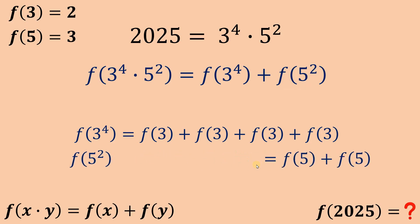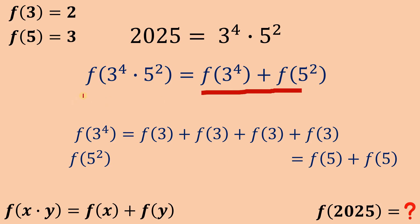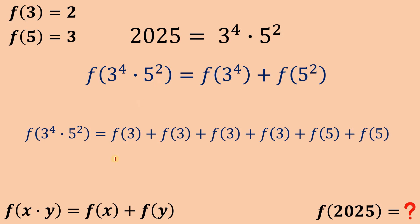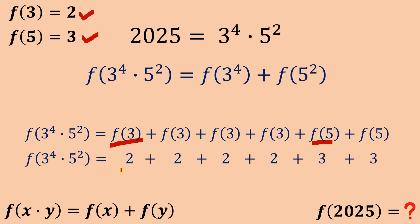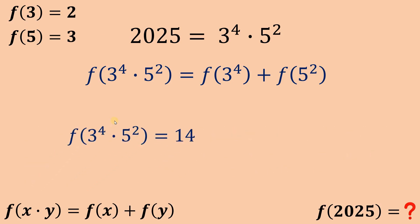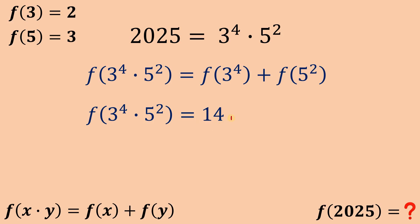Combining these, f(3⁴ times 5²) equals f(3) added 4 times plus f(5) added 2 times. We know f(3) equals 2 and f(5) equals 3, so adding 2 four times gives 8, and adding 3 two times gives 6. Therefore 8 plus 6 is 14.